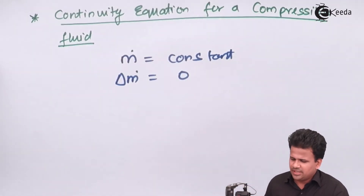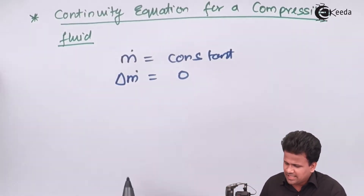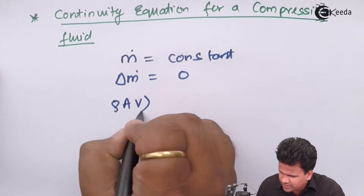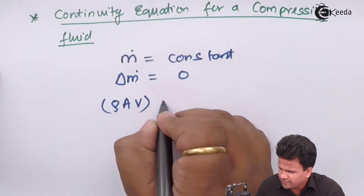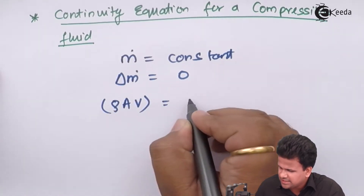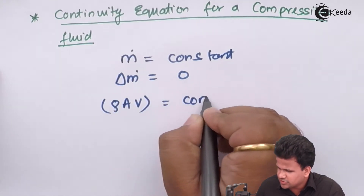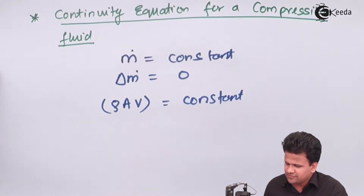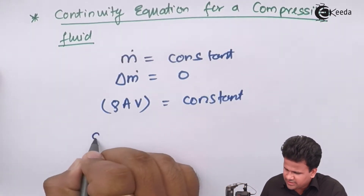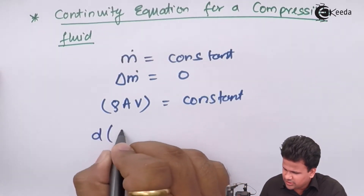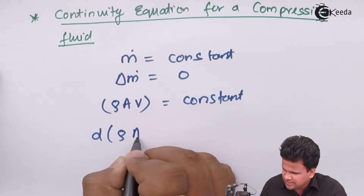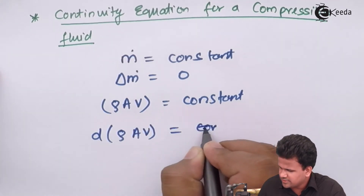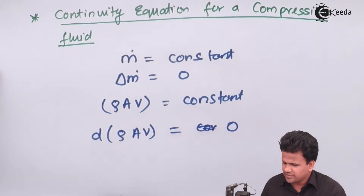This can be written as rho times A times V equals a constant. So the change in mass flow rate, that is d(ρAV), is equal to zero.